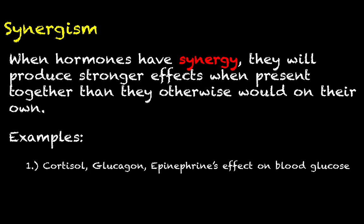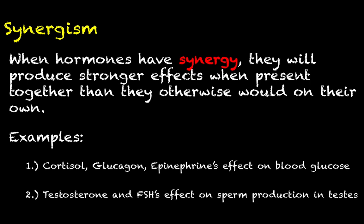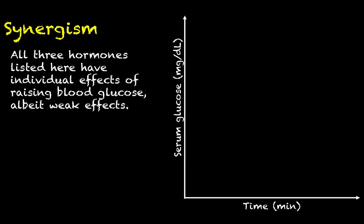The best example of synergy, which we'll discuss on the next slide, is the actions of cortisol, glucagon, and epinephrine and how they together affect blood glucose. Another example worth mentioning is the synergy between testosterone and follicle-stimulating hormone and how they stimulate sperm production in the testes. We'll have a future video on the male reproductive system and spermatogenesis where we'll bring that up again.